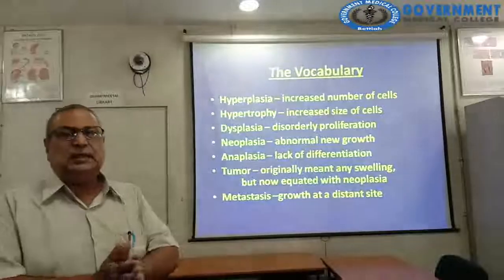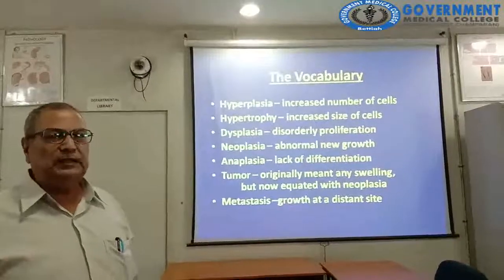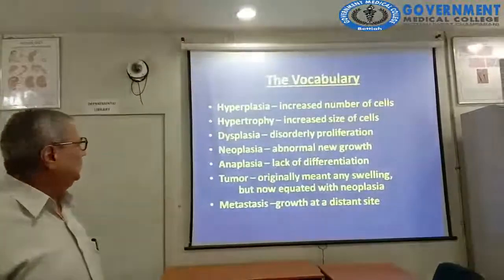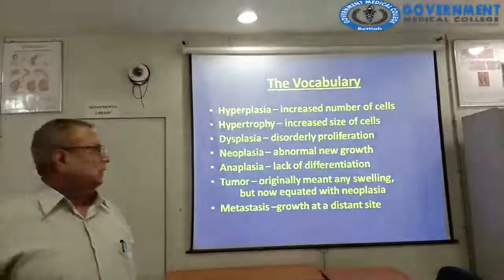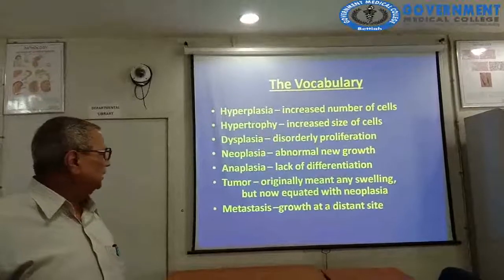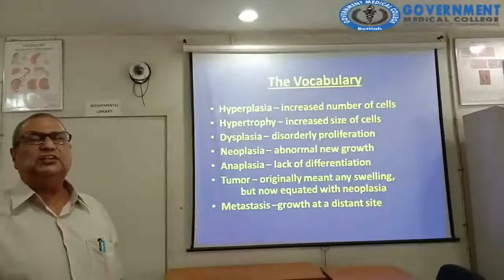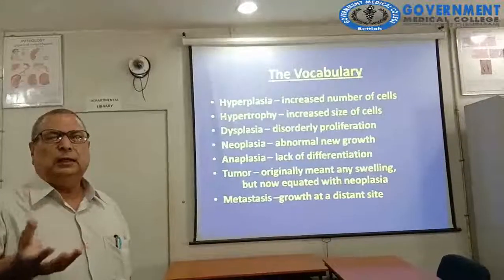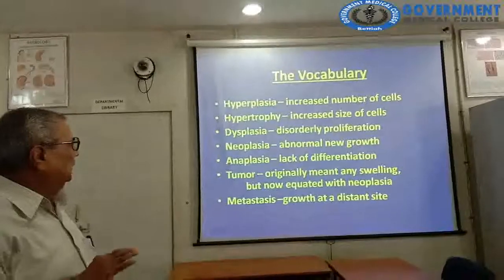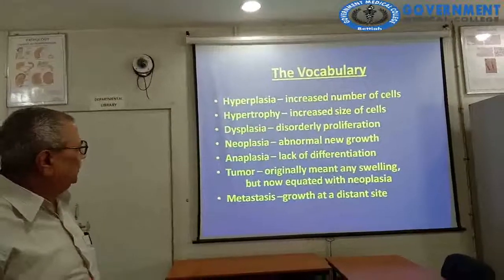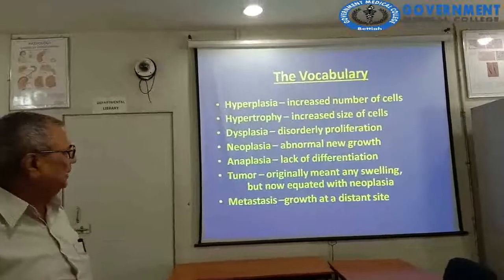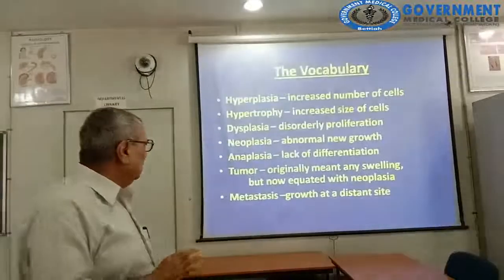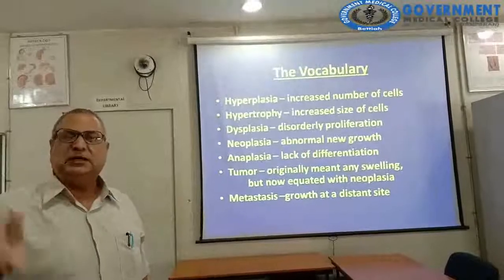Vocabulary: hyperplasia is increase in number of cells; hypertrophy is increase in size of cells; dysplasia is disordered growth or disordered proliferation; neoplasia is abnormal new growth; anaplasia is lack of differentiation. Tumour originally meant any swelling — including inflammatory swelling, hematoma, and neoplasm. Metastasis means growth at a distant site.